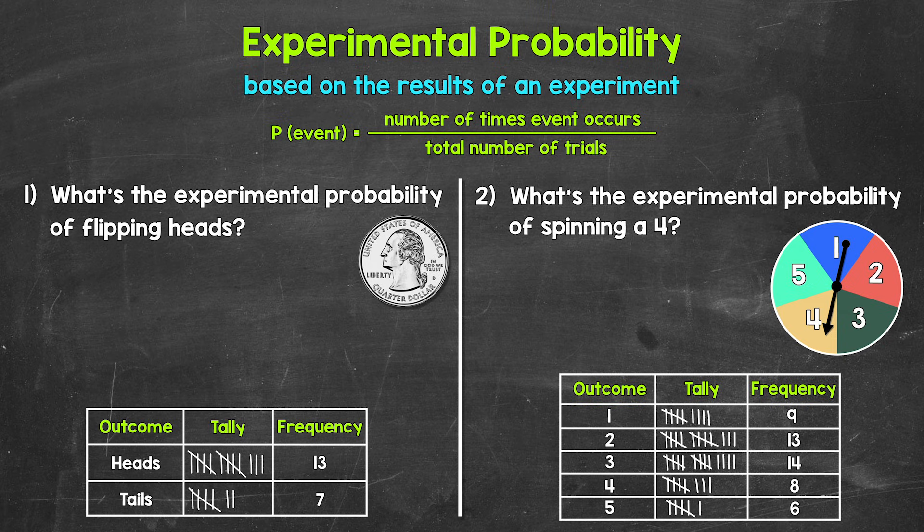Let's jump into our examples, starting with number one, where we have what's the experimental probability of flipping heads. Now you'll notice down below, we have the results of an experiment that we're going to use to calculate the experimental probability. So for our experiment here, we flipped a coin. We have two possible outcomes when we flip a coin: heads or tails. So those are our outcomes.